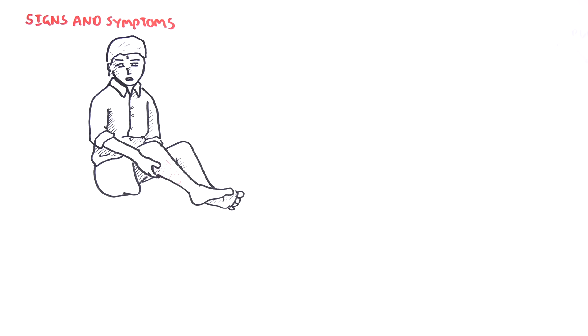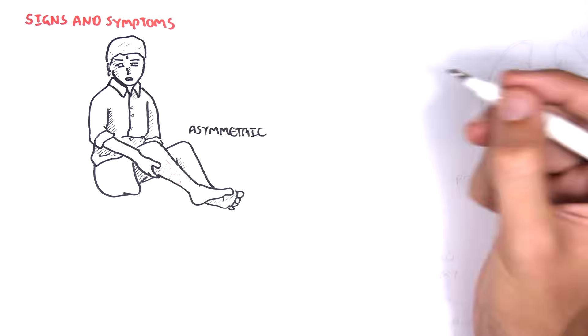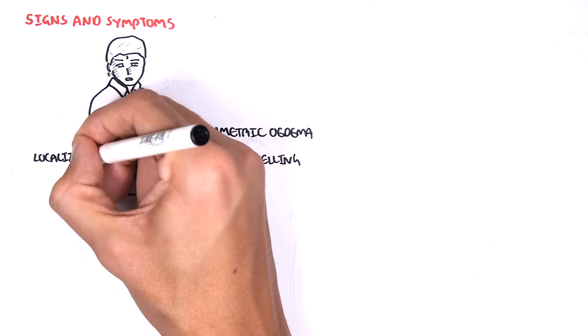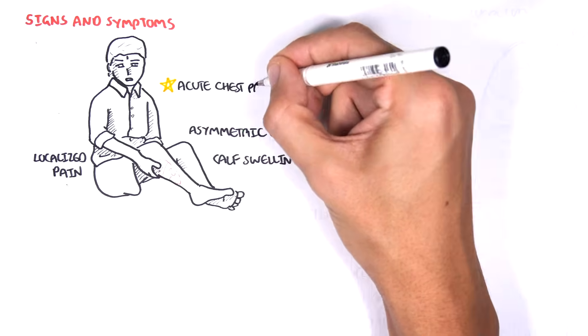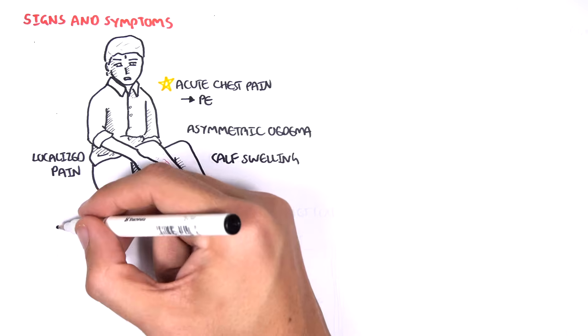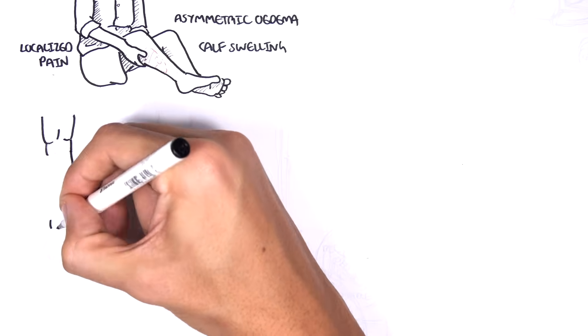The signs and symptoms of DVT include asymmetrical edema, asymmetrical calf swelling, and asymmetrical localized pain in the calf. There can be signs and symptoms of pulmonary embolism as well, which is again a common complication of DVT.